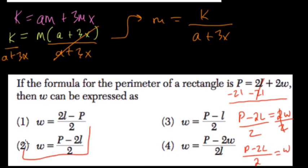So P minus 2L over 2 is W, or choice 2. Alright, hope this helped.